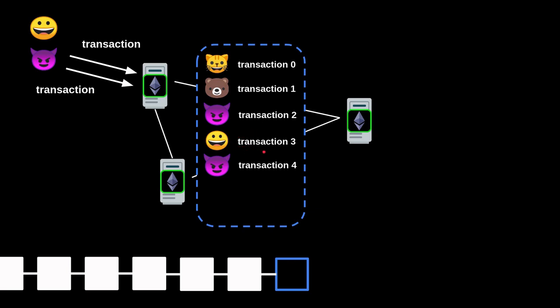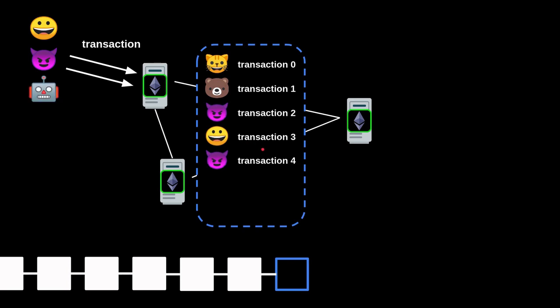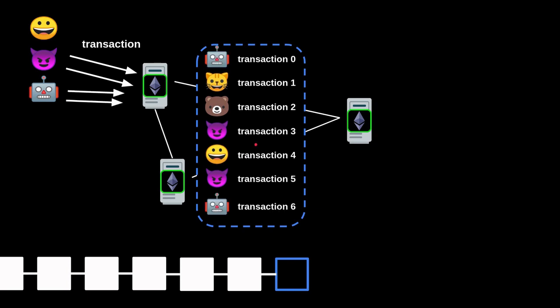This is a common attack used on DEXs like Uniswap. Eve sends two transactions on Uniswap, sandwiching Alice's transaction to make some profit. And of course, Eve is not the only actor looking for sandwich opportunities — and nothing is stopping them from doing a sandwich attack on a sandwich attack. Sandwiching a sandwich.